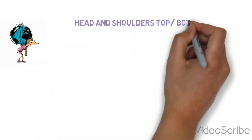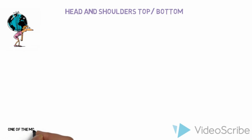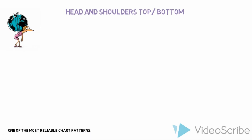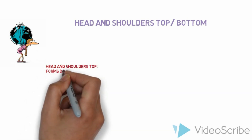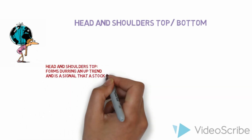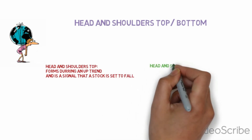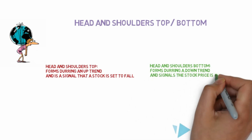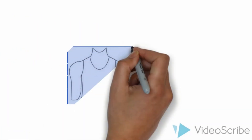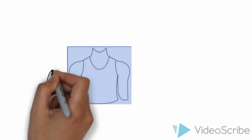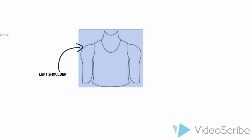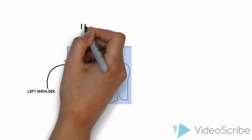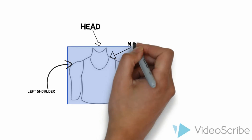Lastly, we have head and shoulders tops and bottoms. These are one of the most reliable patterns for all traders — you have to know this chart pattern. Head and shoulders tops form during an uptrend and signal that a stock is set to fall, while head and shoulders bottoms form during a downtrend and signal that the stock price is set to rise. You have the left shoulder, where the security reaches a high and retraces to a new low. Then we have the head, where the security reaches a higher high but falls back near the low of the left shoulder. The right shoulder forms a lower high than the head and falls back to the left shoulder. The neckline is your support line.